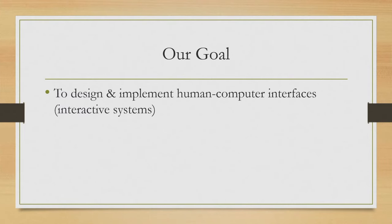Human computer interfaces are examples of systems that are called interactive systems. So in order to design and implement human computer interfaces, what we need is to know how to design and implement interactive systems. Here, by the term system, what we are referring to is a software that is to be run on some hardware, but hardware design is not our concern — our concern is to develop a software. So when we talk of developing a software, what is the difference between design and implementation of any software and design and implementation of interactive software?